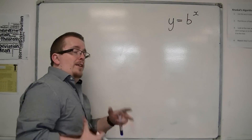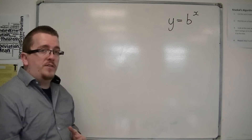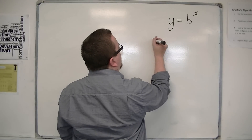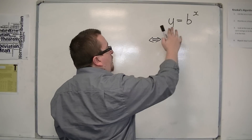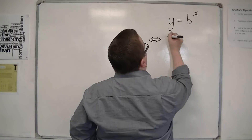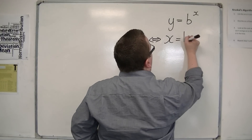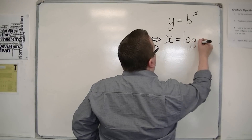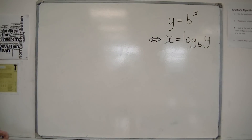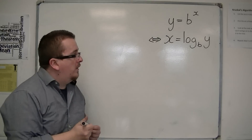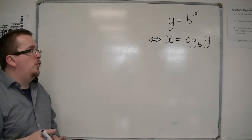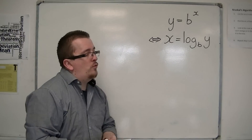That is where logarithmic notation comes in. We say that if y is equal to b to the x, then x is equal to the logarithm of base b of y. Now, this may not seem like it's simplifying the problem whatsoever, because it's throwing in a whole new kettle of fish — these logarithms.